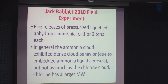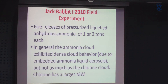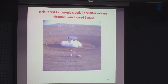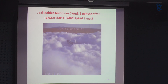The next experiment is Jackrabbit One in 2010. Again it was pressurized liquefied anhydrous ammonia, this time one or two tons, with five releases. The ammonia exhibited dense cloud behavior, but not as much as the chlorine cloud — we also did five chlorine releases, which were shallower and denser-looking than the ammonia, as chlorine has a much larger molecular weight. In the photograph, two seconds after release there is a tank and the release was pointed downwards, with the two-phase wall jet spreading out in all directions. After a minute — once the release had mostly stopped — under light winds you have just a big two-phase cloud in the neighborhood of the source, and the depth of the cloud is two or three meters.